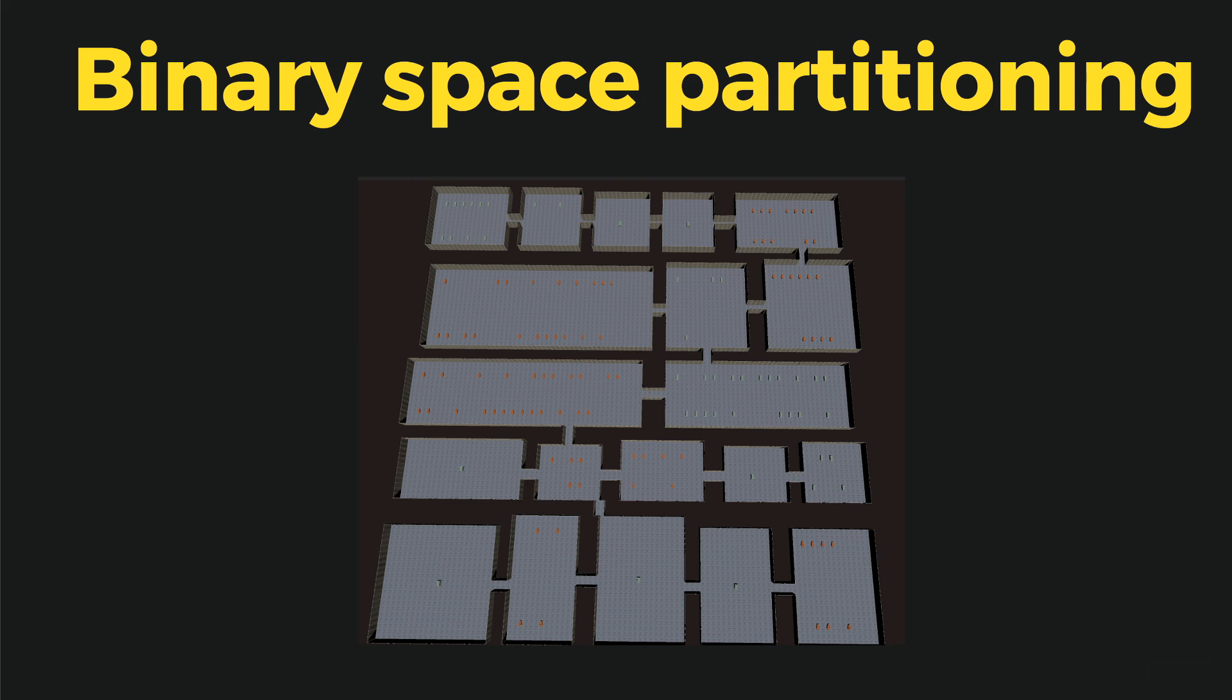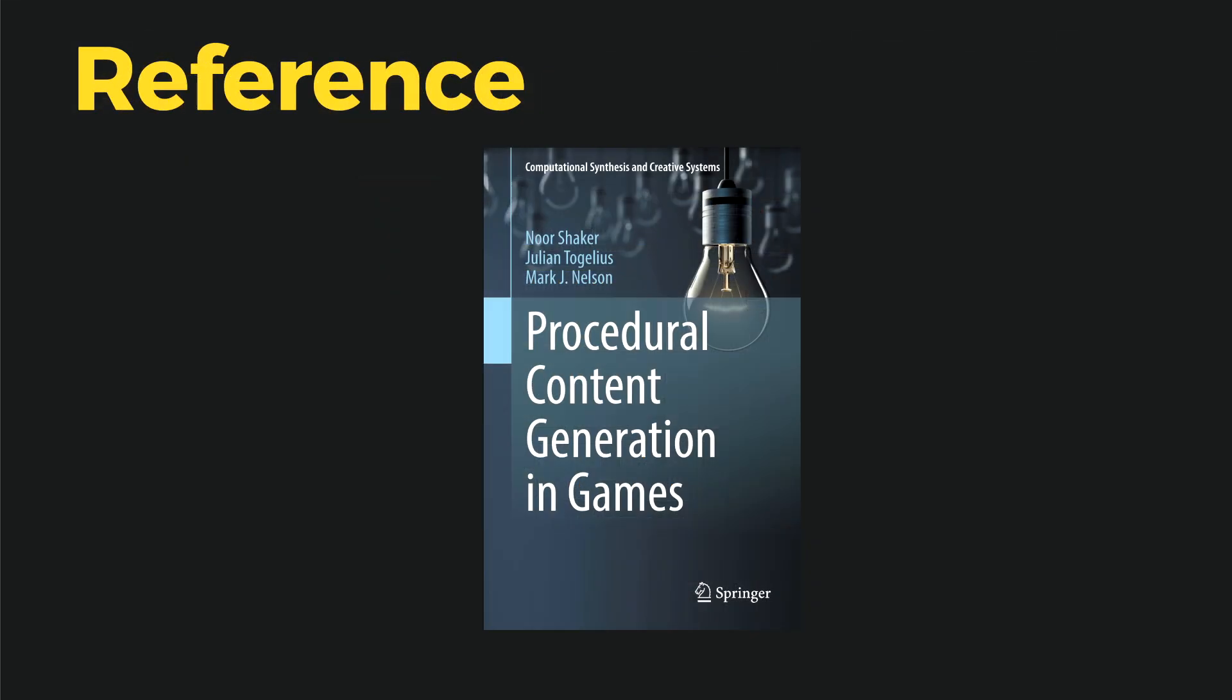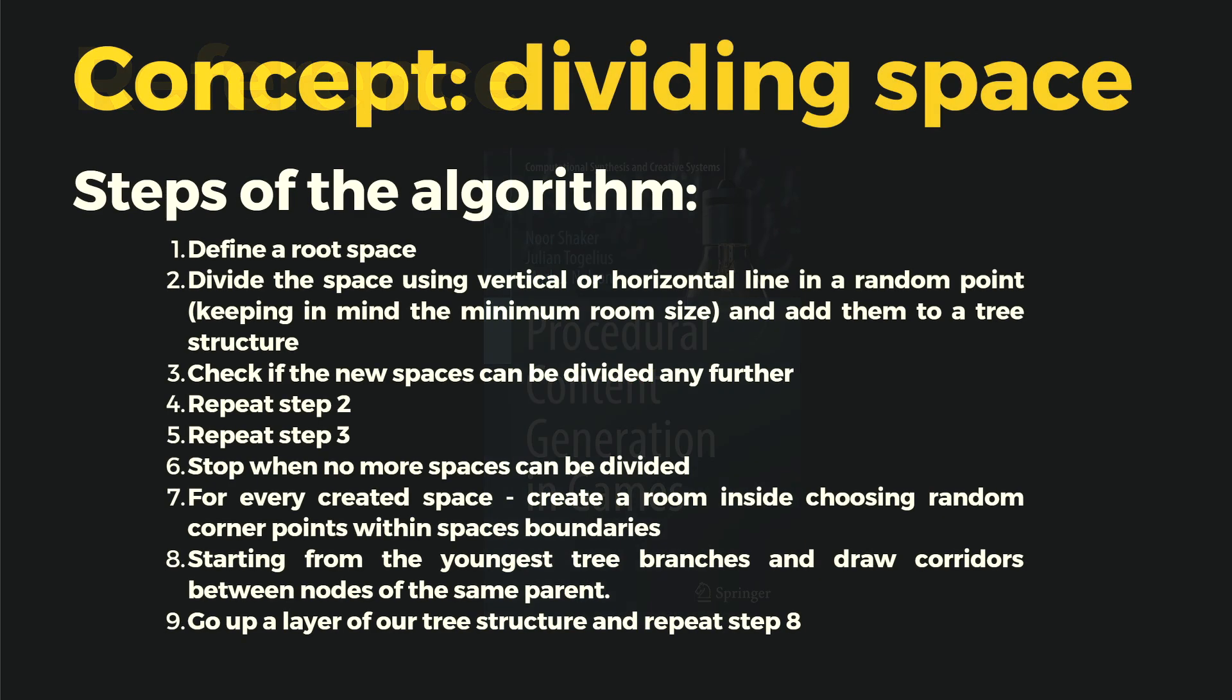If you want to know more about this method, I strongly suggest to read this book: Procedural Content Generation in Games. So the algorithm itself goes as follows: we first define a root space, so the width and the size, and also the size of the room that we want to create, the minimum size.